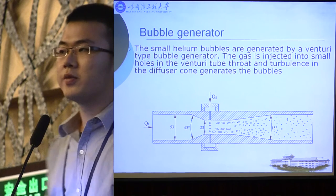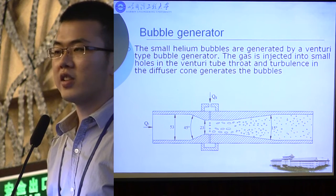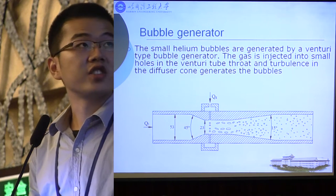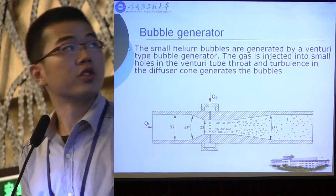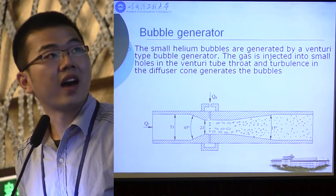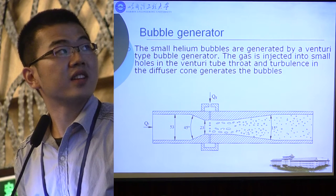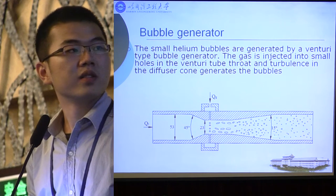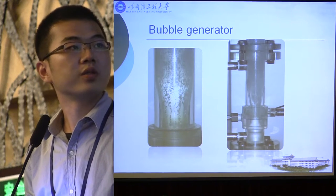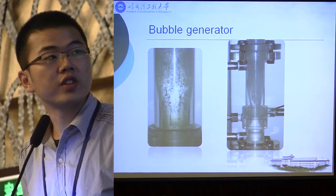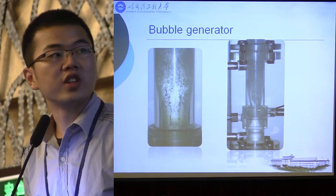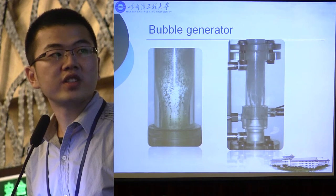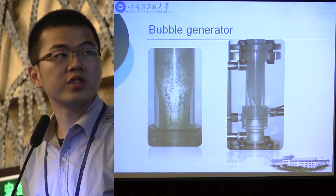The bubble generator designed for the molten salt reactor is actually a modified venturi tube. The gas is injected into small holes in the venturi tube throat, and turbulence in the diffuser cone generates the bubbles. Here are two pictures of the designed bubble generator. We can notice that there is an annular gap outside the throat area, which was used for introducing gas.